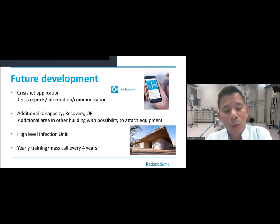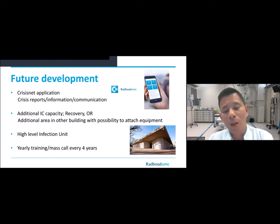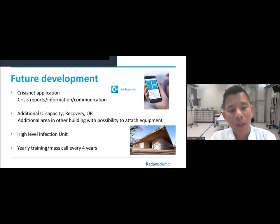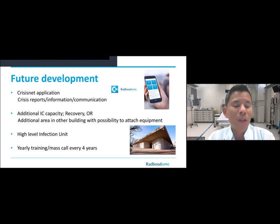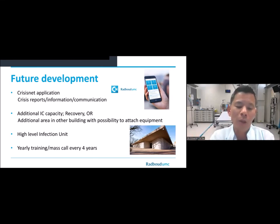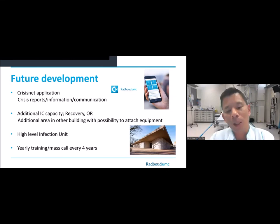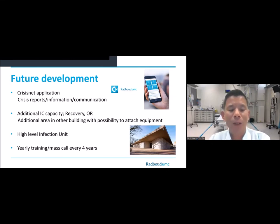In normal times, patients with suspected infectious disease such as Ebola or Lassa fever would go to the ER and then be transported all the way to the high-level infection unit. We thought that was not ideal, so we built a high-level infection unit at the corner of the hospital with a separate entrance, so suspected Ebola or other contagious disease patients can go directly there without transiting the hospital.